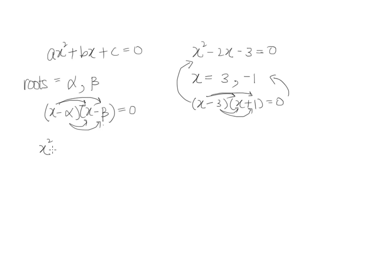So we will end up with x squared minus beta x minus alpha x plus alpha beta equals to zero. And we were to simplify this a little further. So we will get x squared minus alpha plus beta x plus alpha beta equals to zero.